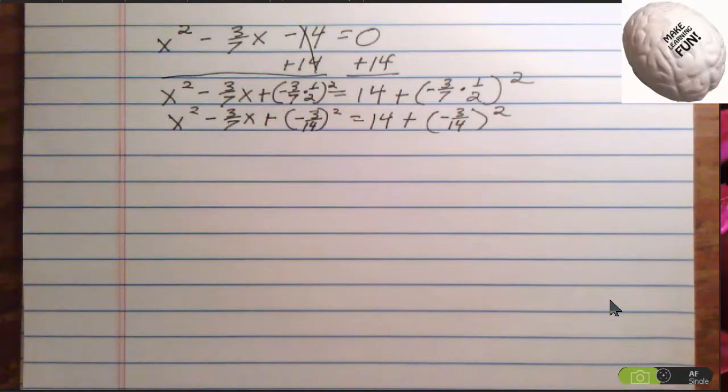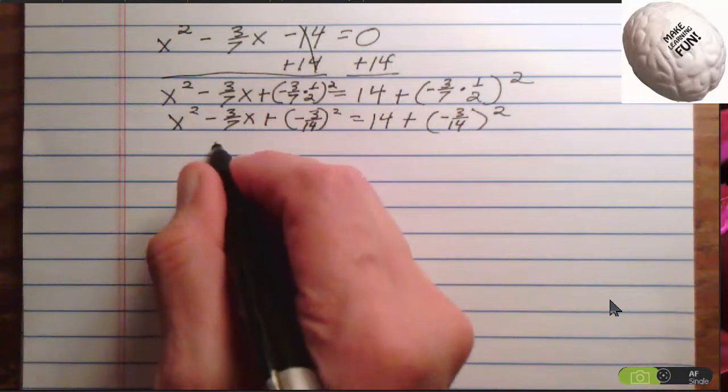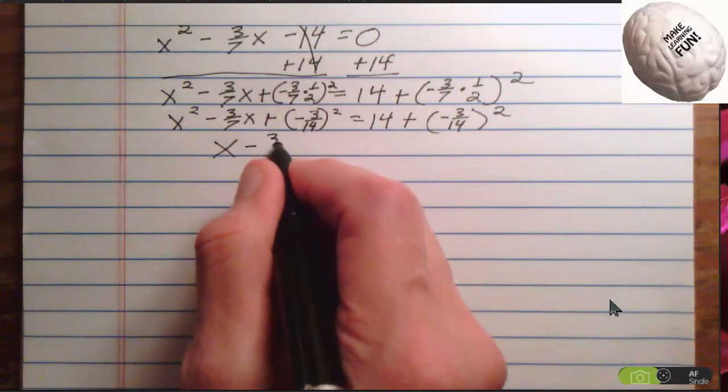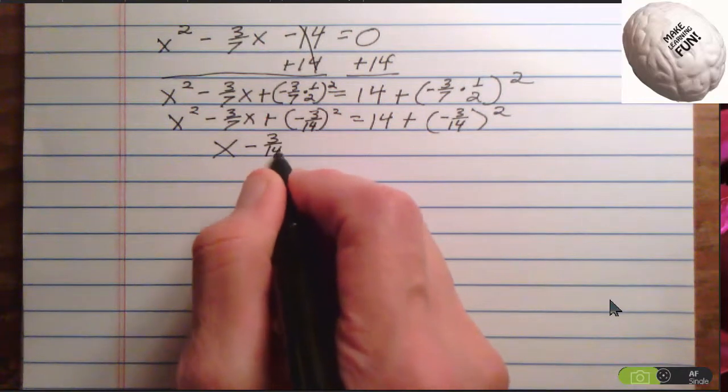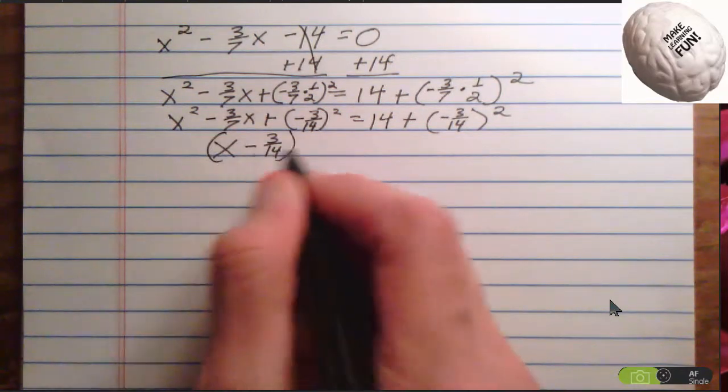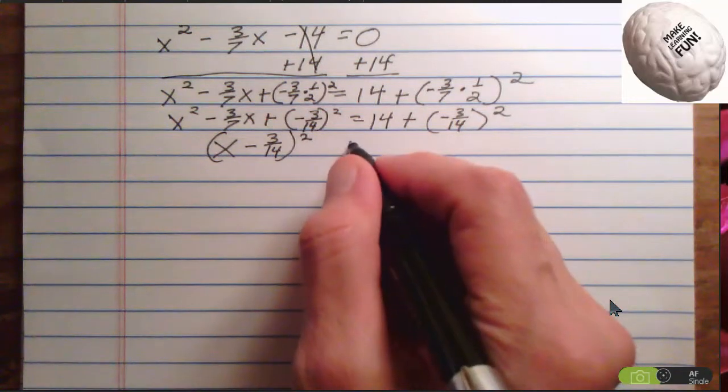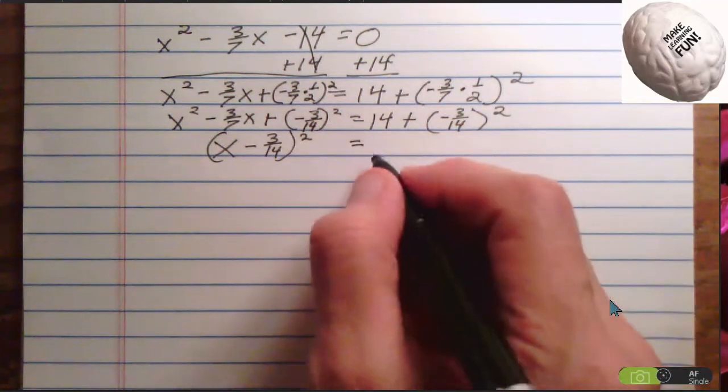Okay, on the left-hand side, all I have to do is x minus 3 fourteenths parentheses around that squared. Over here, I'm really going to have to work.